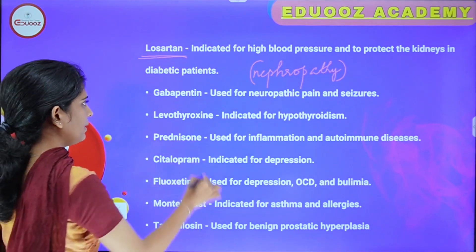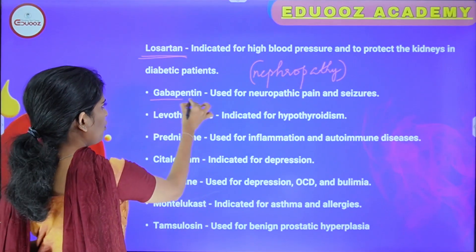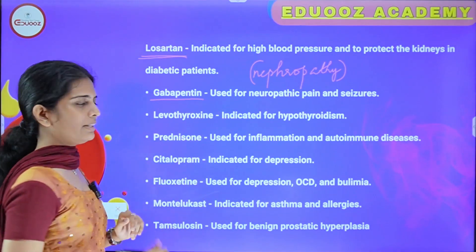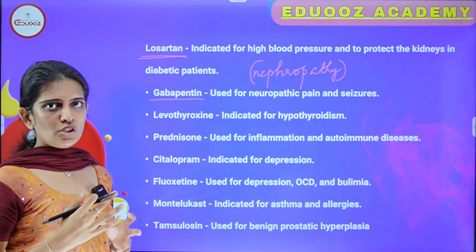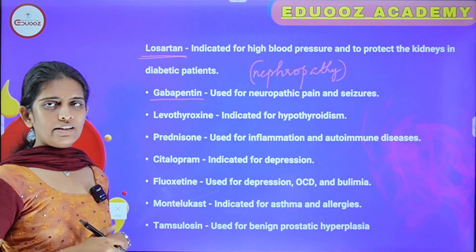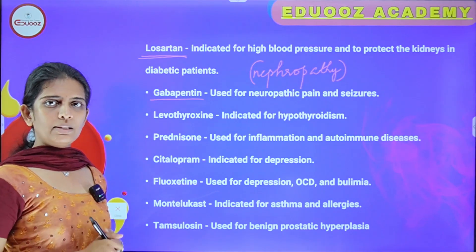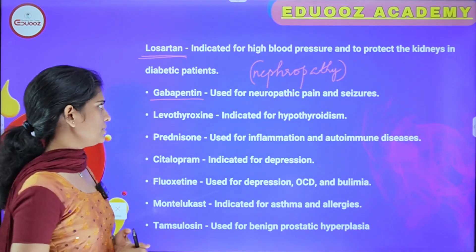Gabapentin is used for neuropathic pain and seizures — for seizure conditions and neuropathic pain.